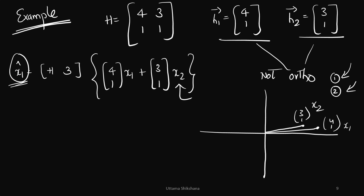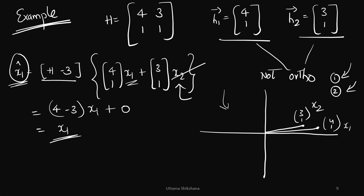To recover x1, I place a vector orthogonal to h2 (the direction of x2). The vector [1, −3] is orthogonal to [1,1] — applying it gives (4−3)x1 + 0·x2, which yields x1. So I tune my receiver in the direction [1, −3], which is 90 degrees to h2. I am not looking in the exact direction of h1, but this ensures no x2 component leaks into the x1 estimate.